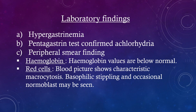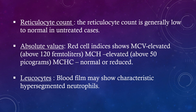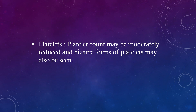Peripheral smear findings. Hemoglobin values are below normal. Blood picture shows characteristic macrocytosis. Basophilic stippling and occasional normoblast may be seen. The reticulocyte count is generally low to normal in untreated cases. Red cell indices show MCV elevated above 120 femtolitres, MCH elevated above 50 picograms, MCHC normal or reduced. Blood film may show characteristic hypersegmented neutrophils. Platelet count may be moderately reduced and bizarre forms of platelets may also be seen.